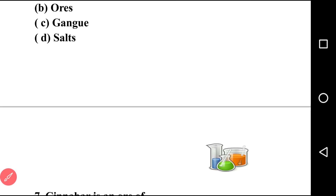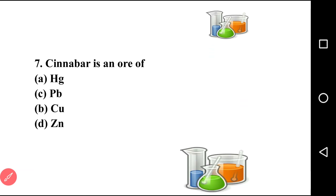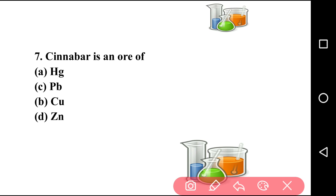Going to next question, that is question number seven. Cinnabar is an ore of? There are four options: mercury, lead, copper, zinc. The correct answer is option A, that is mercury. Cinnabar is an ore of mercury.